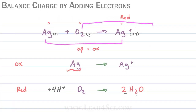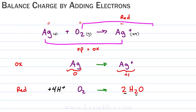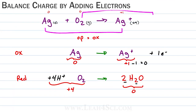For the oxidation reaction, the sum of the reactants is zero and the sum of the products is plus one. We add electrons to the higher number to bring it down: one minus one equals zero, so we add one electron to the products. For the reduction half reaction, the sum of the reactants is plus four (from the positive hydrogens) plus zero for oxygen, and the sum of the products is zero. To bring four down to zero, four minus four equals zero, so we add four electrons to the reactant side.